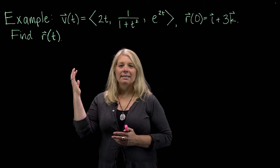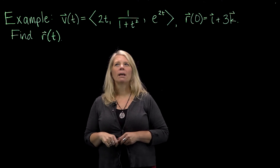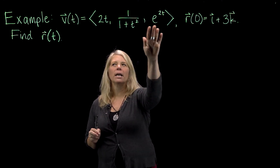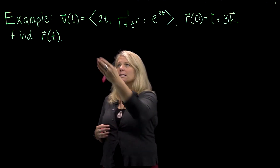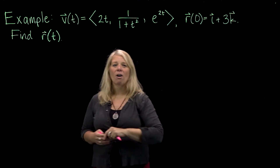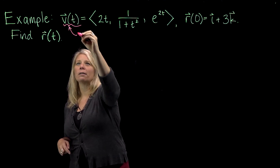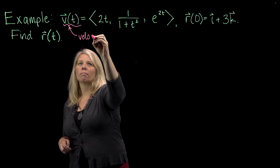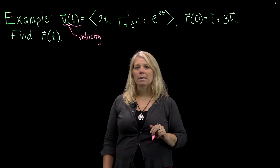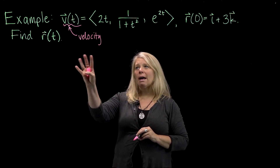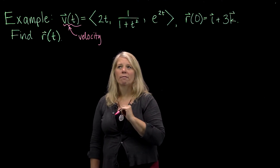In this video, we're going to look at this example problem. We have a vector-valued function labeled v of t. In this context, when we have a v of t and r of t, we should recognize that v of t represents a velocity vector, and r of t would be the position vector. The velocity vector is really the same thing as the derivative of the position vector.